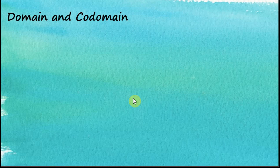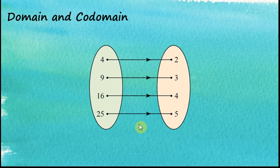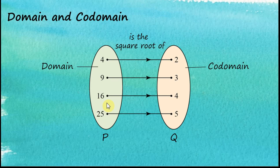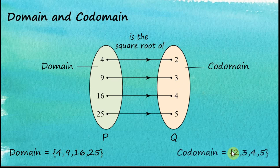Domain and co-domain. We have two sets P and Q, where the elements in set Q are the square roots of the elements in set P. All the elements in set P are called the domain, and all the elements in set Q are called the co-domain. So the domain is 4, 9, 16, and 25, and the co-domain is 2, 3, 4, 5.